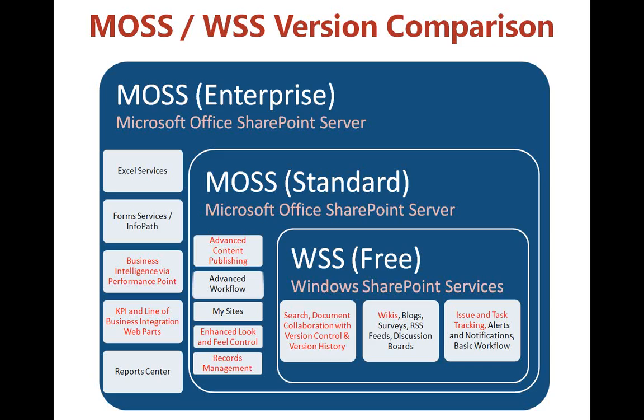Starting in the bottom right rectangle, we have Windows SharePoint Services, and most of the features we just talked about are included here: search, document management including version control and version history, wikis for best practices and standard operating procedures, and many project management capabilities such as issue and task tracking. When you look at the standard version of MOSS, one of the key features, especially for a larger organization, is the content publishing capability — anybody can contribute content, but you can force it through a workflow approval process. The standard edition also provides additional look-and-feel capabilities as well as a records management feature that allows you to expire content after a pre-specified period of time.